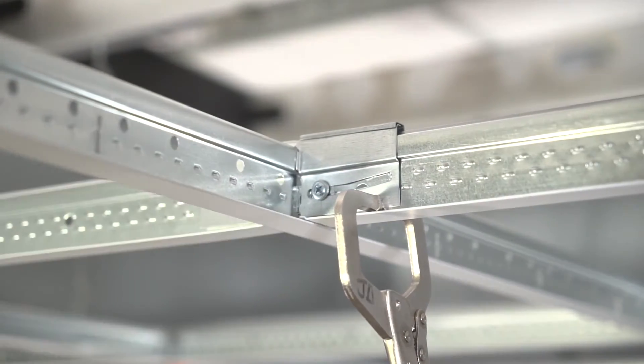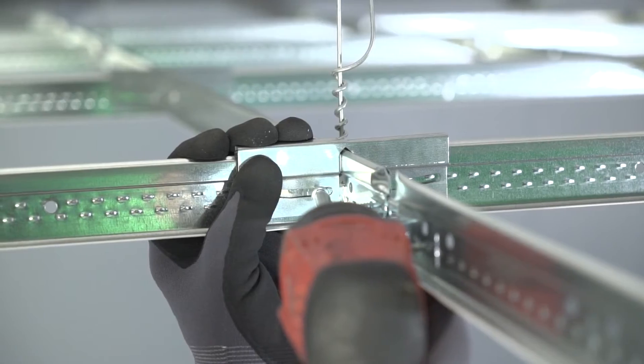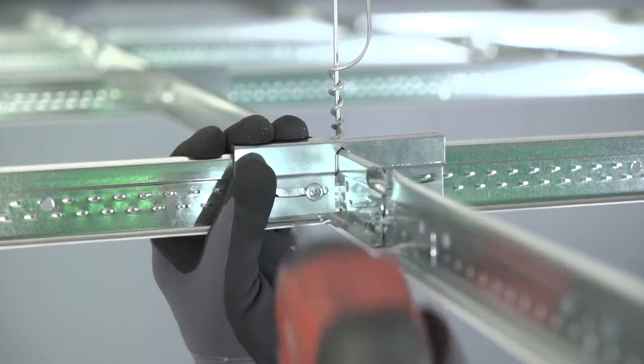Once secured on both sides of the intersection, both cross T's on either side of the main will have 3-quarter inches of movement in a seismic event.